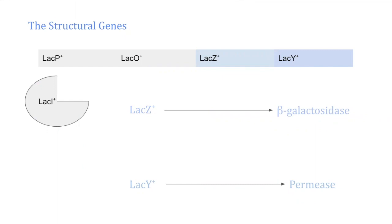The first part of the operon that we will go over are the structural genes, lacZ and lacY. The structural genes will be transcribed and eventually translated into the proteins that break down lactose. LacZ is a gene that eventually produces the protein beta-galactosidase, and lacY will eventually produce permease.